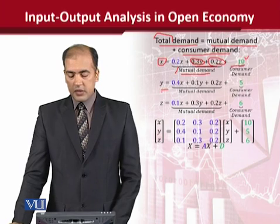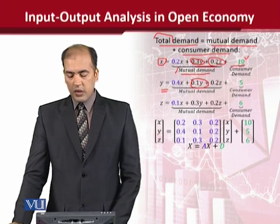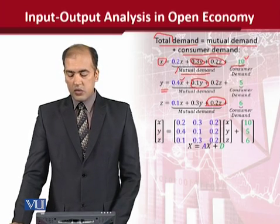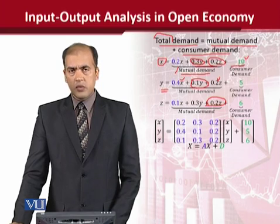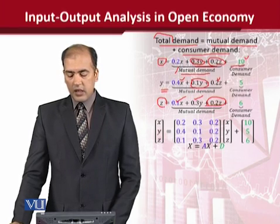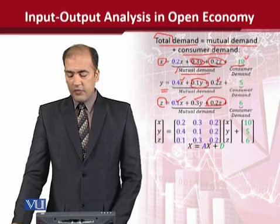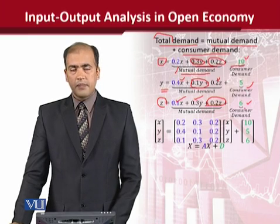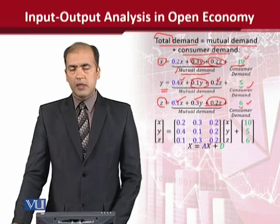For y, the same process is adopted where y uses its own output as an input, and for z the same process applies where z uses its own output as an input. The other sectors use y's output as input, and the remaining two sectors use z's output as their input. Consumer demand is 5 in the case of y and 6 in the case of z. In this way, we have decomposed the total demand.